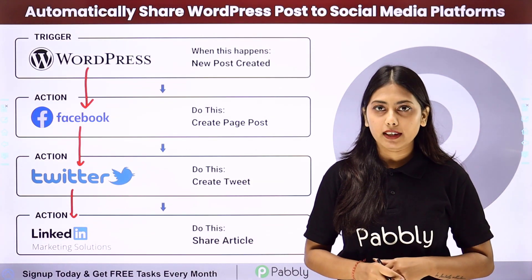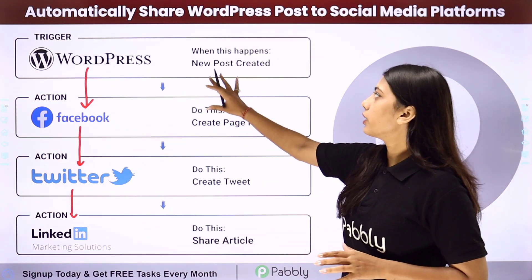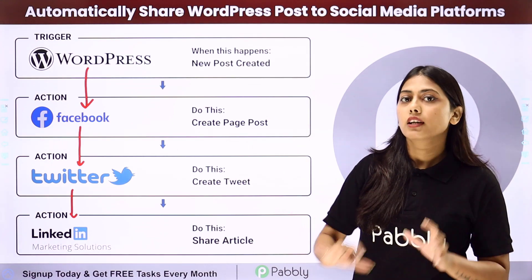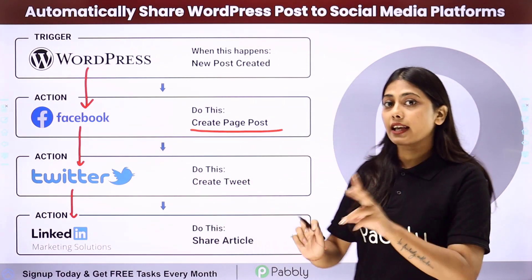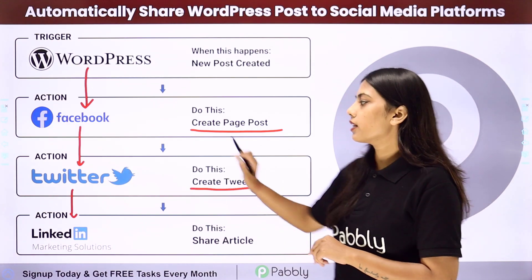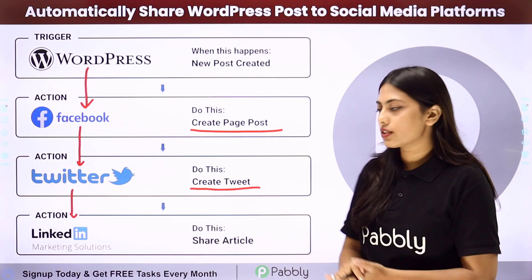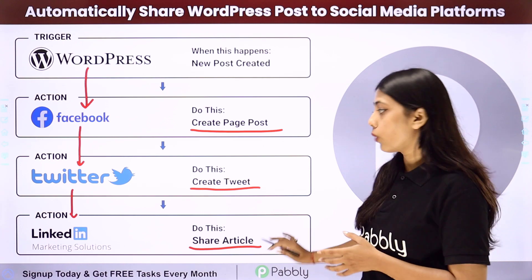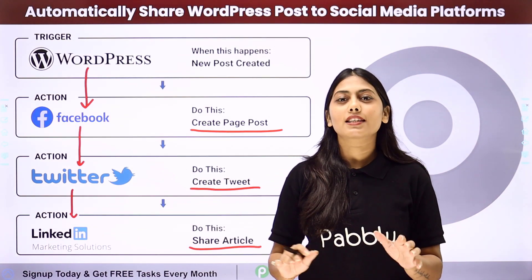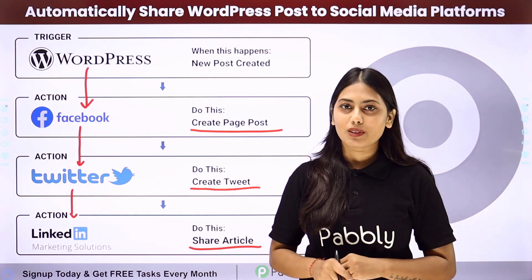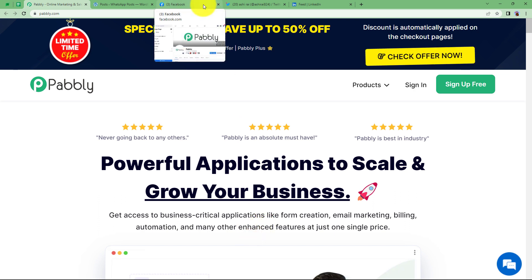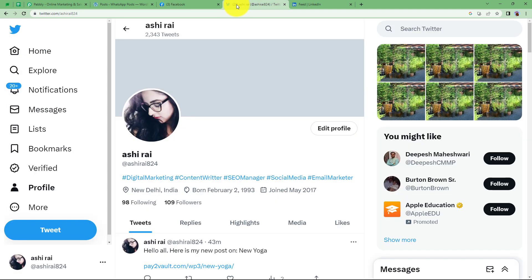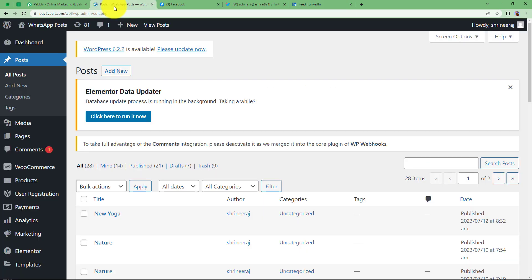We are going to create an automation with the help of Pabbly Connect, where whenever the trigger new post created takes place, the first action will be to create a page post in Facebook, the second action step will be to create a tweet in Twitter, and the last action step will be to share an article URL in LinkedIn as well. Let us learn how to create this automation whenever a new post is created in your WordPress.